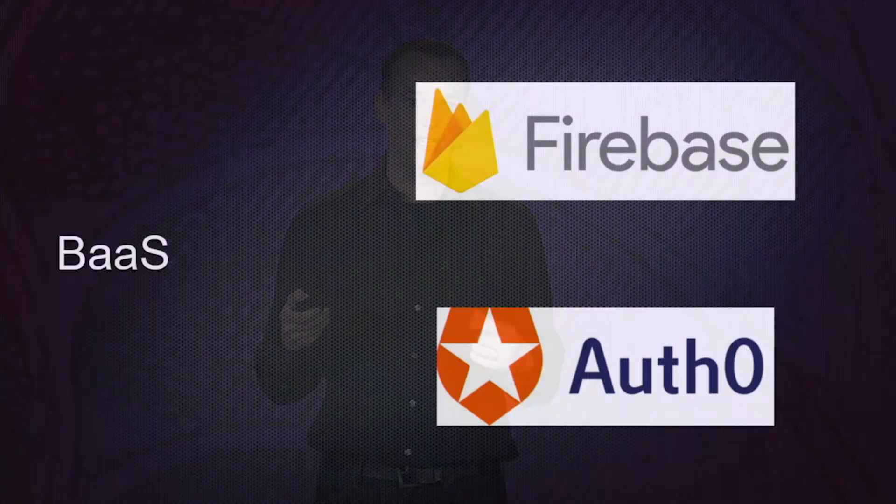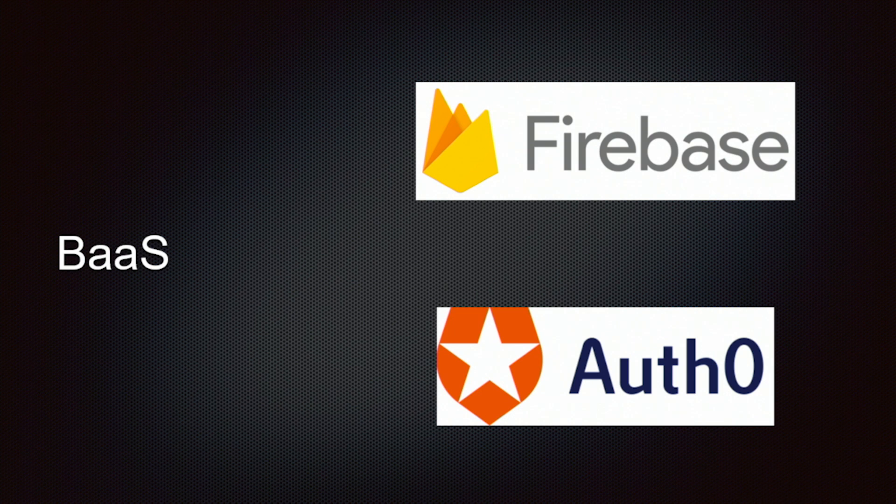Another example of back-end-as-a-service is authentication. Many applications code their own authentication functionality — sign-up, login, password management, integration with other authentication providers, that kind of thing. Most of this code is very similar across many applications. And so products like Auth0 and Amazon Cognito exist, and they are ready-built functionality so that we don't have to build our own authentication functionality ourselves.